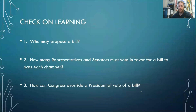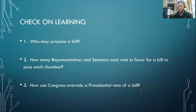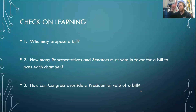That should be mostly it for this slide deck — it's a pretty short one. We'll be talking about this in class, especially with the legislative branch and how things happen. Check on learning questions for you — the same ones that are in Canvas. First: who may propose a bill? Second: how many representatives and senators must vote in favor for a bill to pass each chamber? Third: how can Congress override a presidential veto of a bill? If you missed it, go back to that portion of the video and type some informed answers.